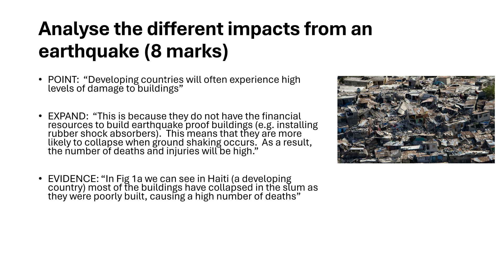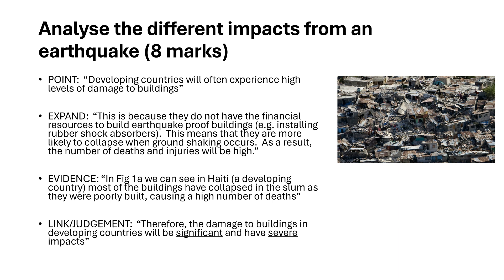Then I'm going to prove it like a good lawyer. 'In Figure 1A, you can see in Haiti, a developing country, most of the buildings have collapsed in the slum as they were poorly built, causing a high number of deaths.' I've used what I can see in the picture just to back up what I've already said. Then in my link and judgment, I bring it back to the heart of the question and make a small judgment: 'Therefore, the damage to buildings in developing countries will be significant and have severe impacts.' I might next time put severe short-term impacts to make it a little bit better, but there's always room for improvement. What I see is a really clear argument using geographical knowledge and evidence afterwards to prove it, with a point and link on either side to make it one concise argument.